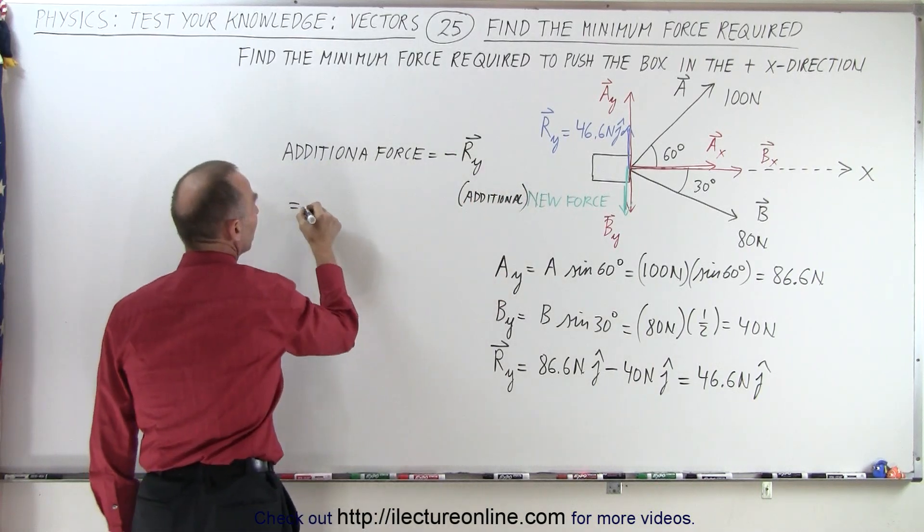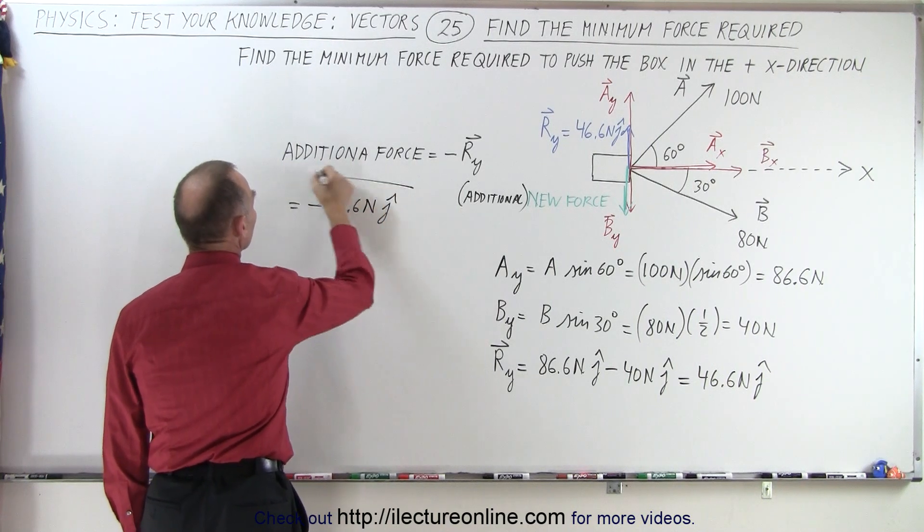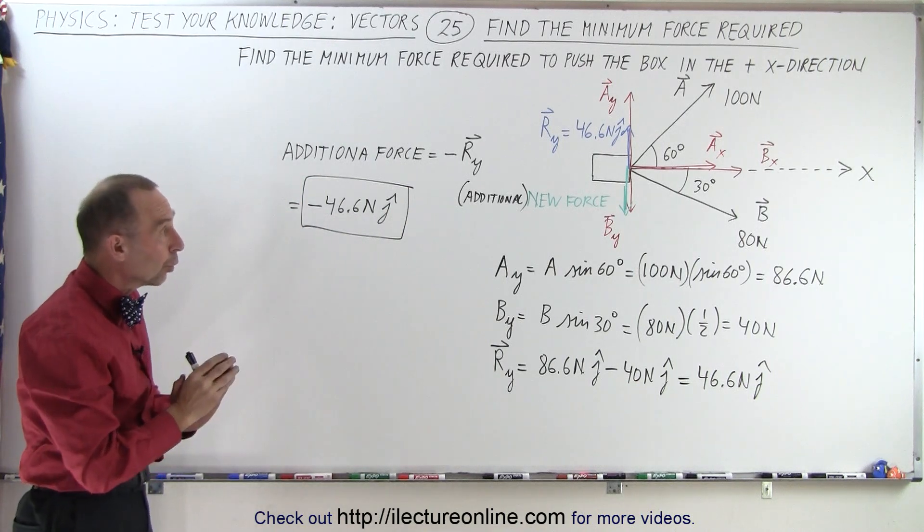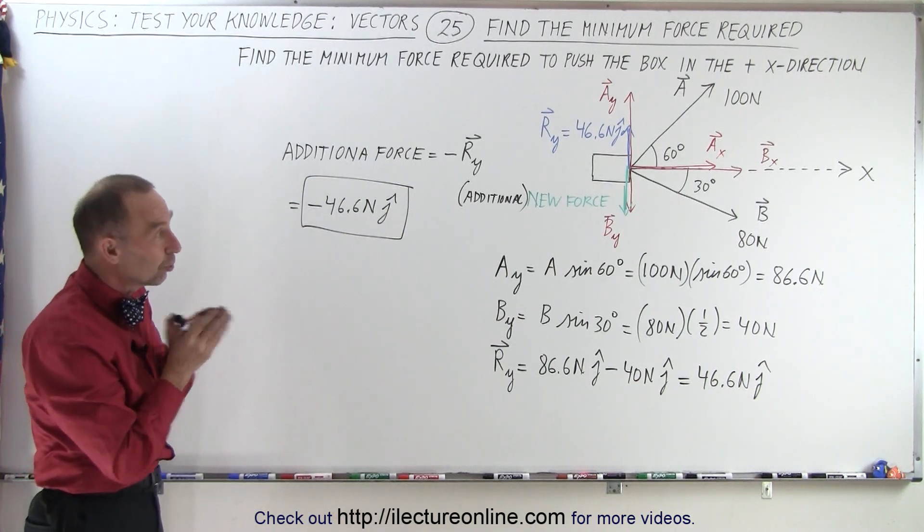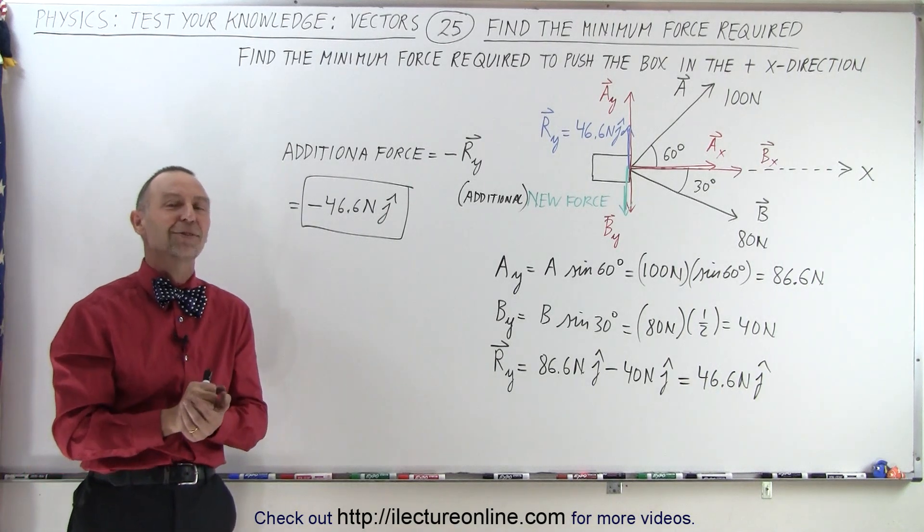And therefore, this will be equal to negative 46.6 newtons in the j direction, which is the force required, so that if we apply that force, we will only have an x component left to the right, and the box will be pushed into the x direction. And that is how it's done.